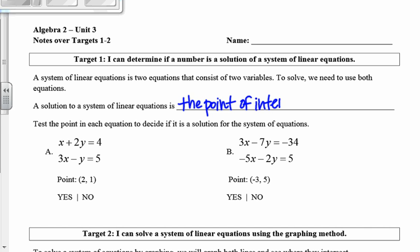A solution to a system of linear equations is the point of intersection. This is something we're going to keep coming back to throughout the unit. When we solve a system, even if we're not looking at the graph, we're finding where those two lines may intersect if they do at all. On this first target, we're just testing whether the point given is actually the point of intersection. So here we're determining, is the point (2, 1) the point of intersection of these two lines?